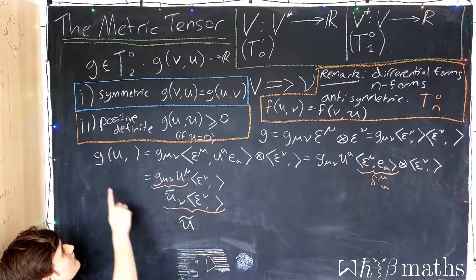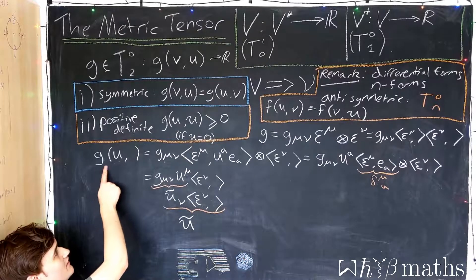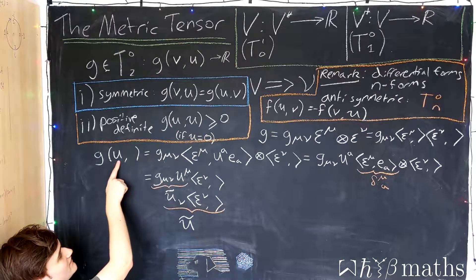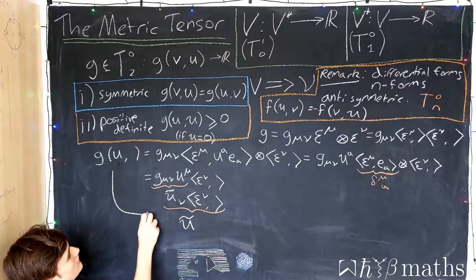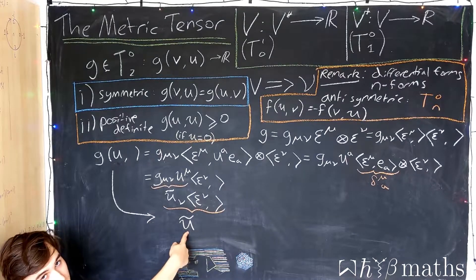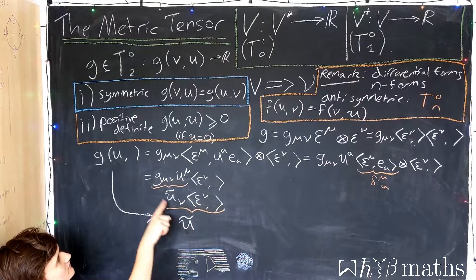So what we've done, we started with the metric tensor and just fed it a single vector. And the result is the corresponding dual vector to that vector.